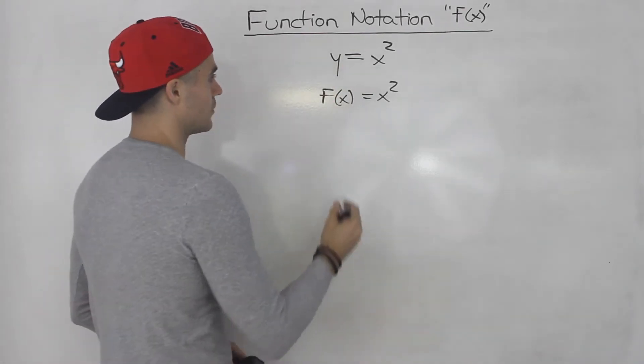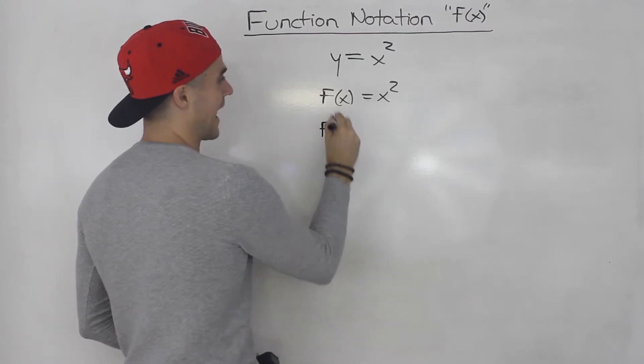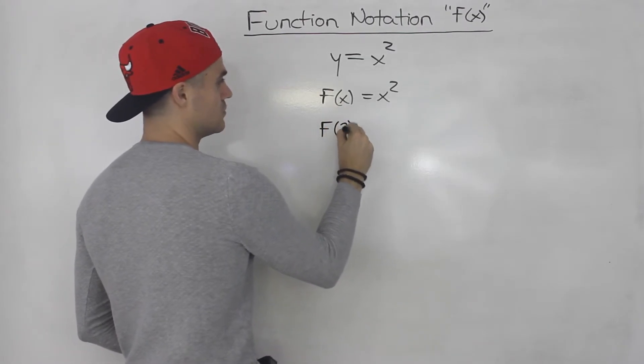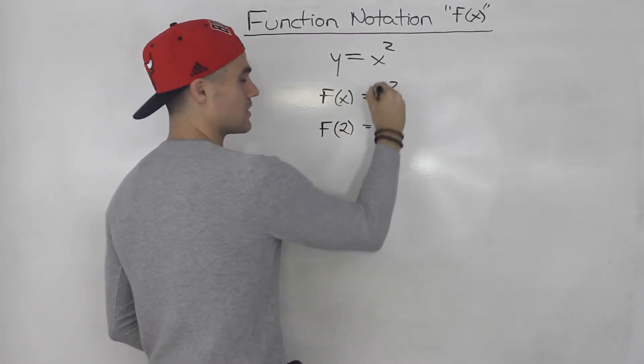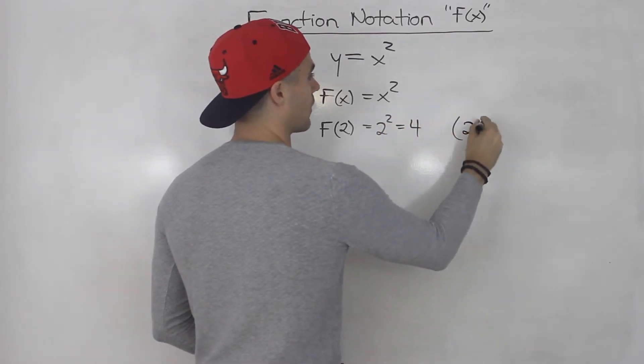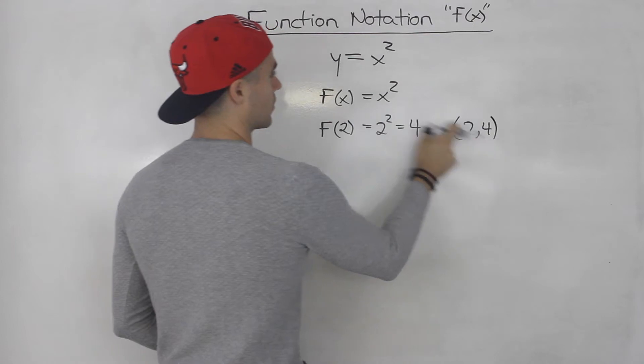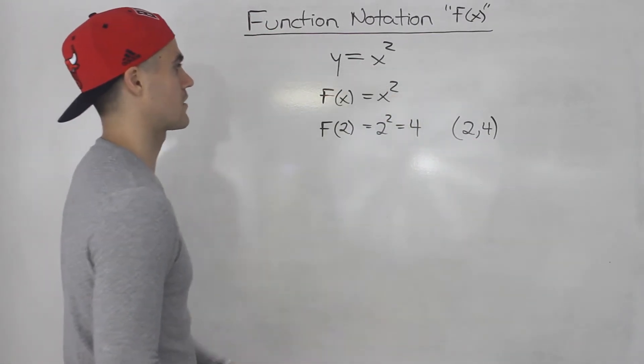For example, if I wanted to know the value of the function at an x value of 2, I would plug in 2 for x into the actual expression and get 4. So we know that 2 and 4 is a coordinate on this function, right? Both of these are the same thing.